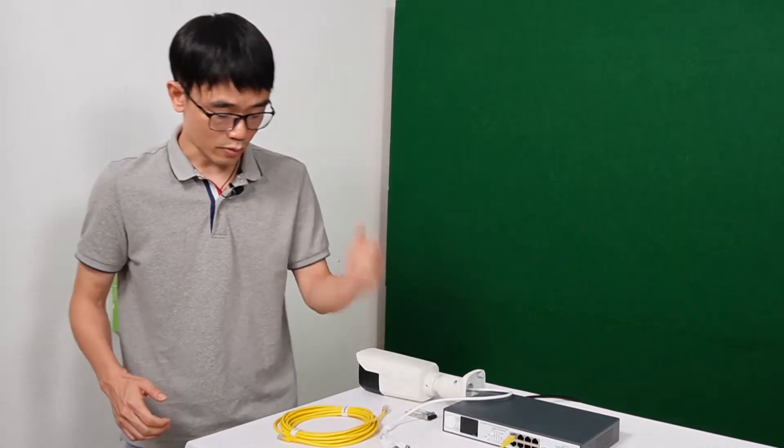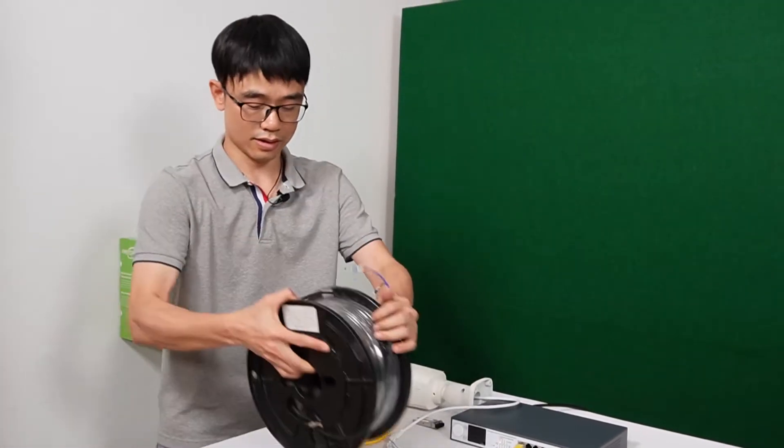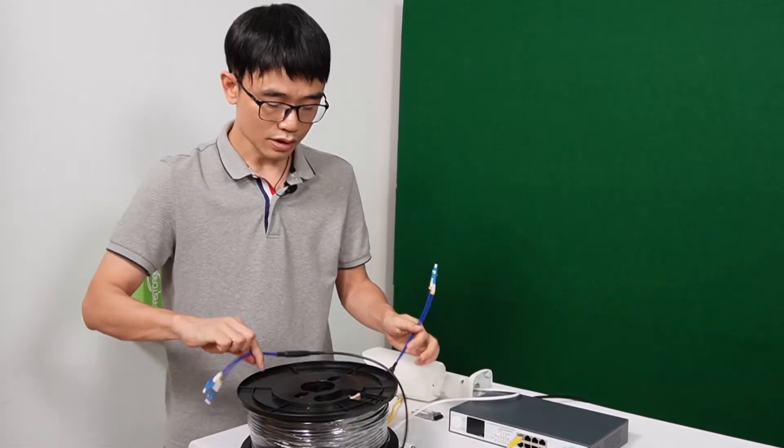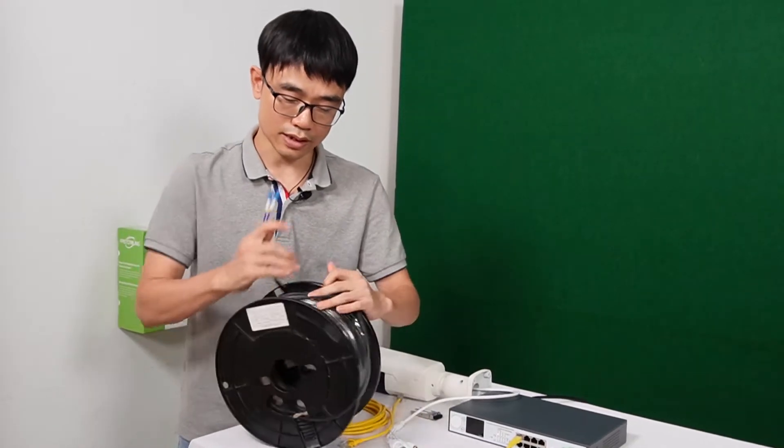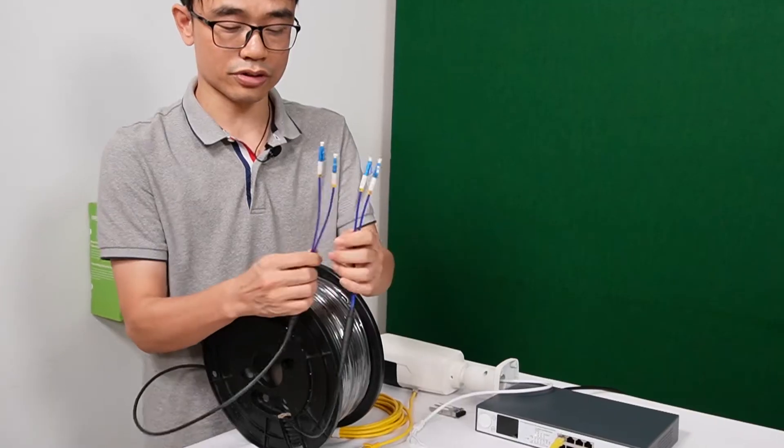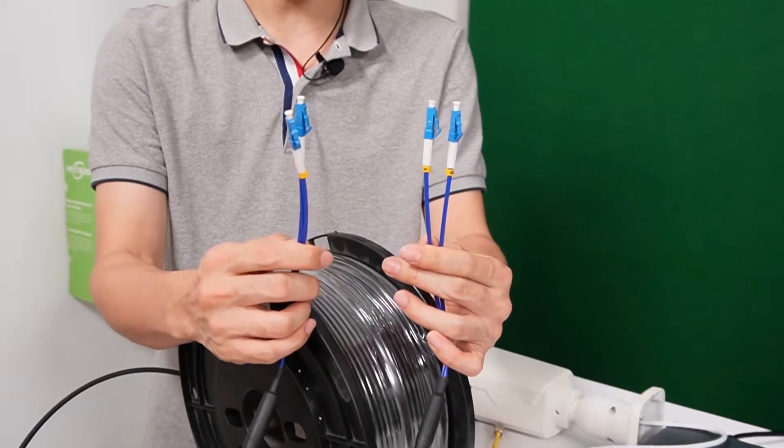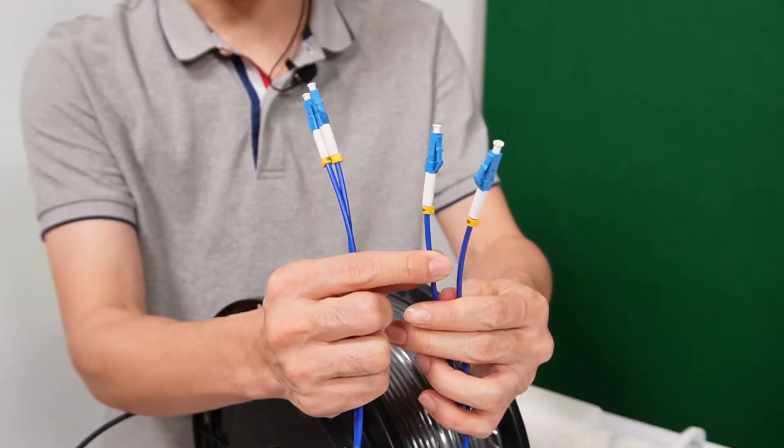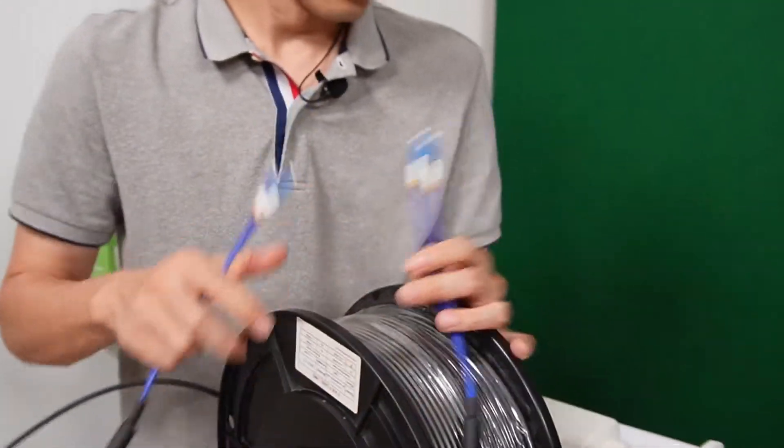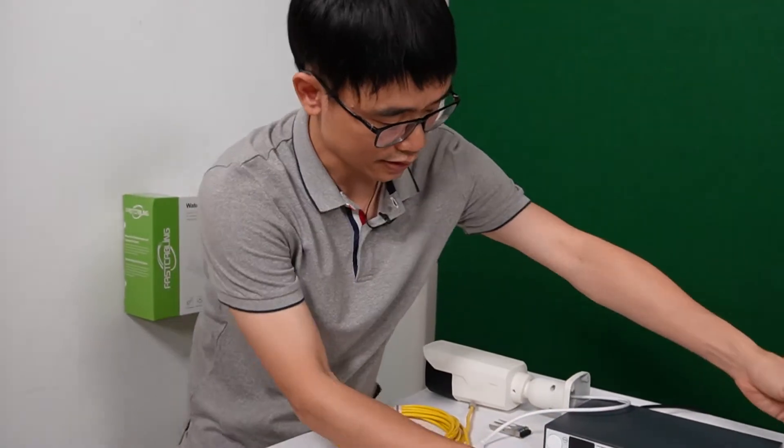Now, as we said, we need to use fiber optic cable. This is a pre-terminated fiber optic cable. You can see the connector is made in the factory, so I don't need to deal with the fusion job in the field. It's an LC connector, simply plug and play. And it's duplex: one is A, another is B.